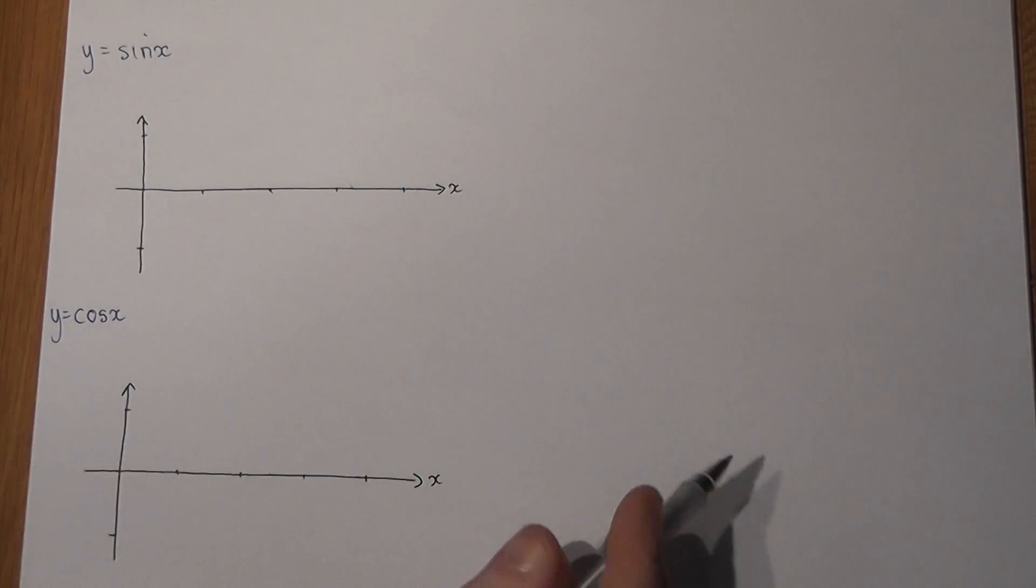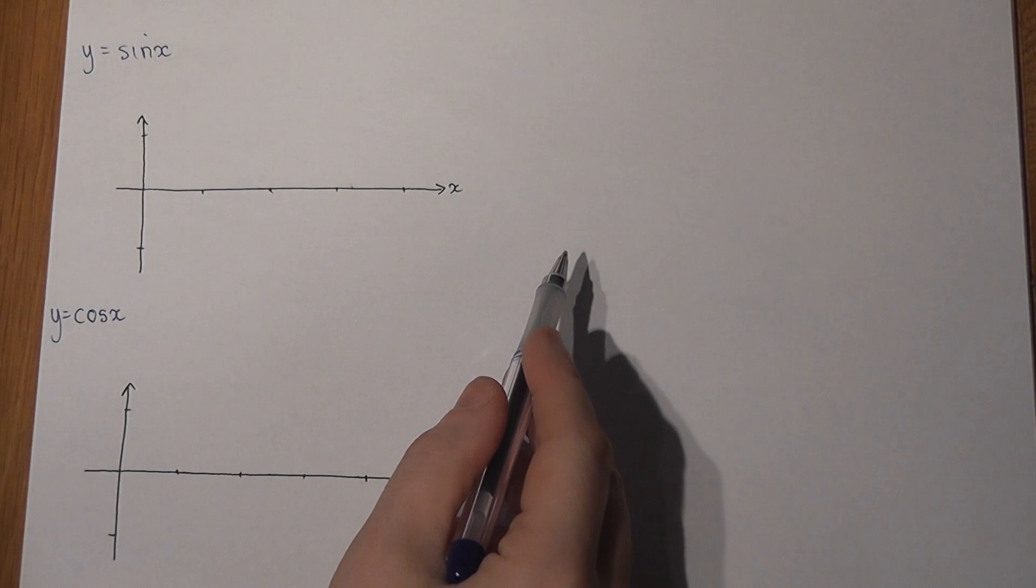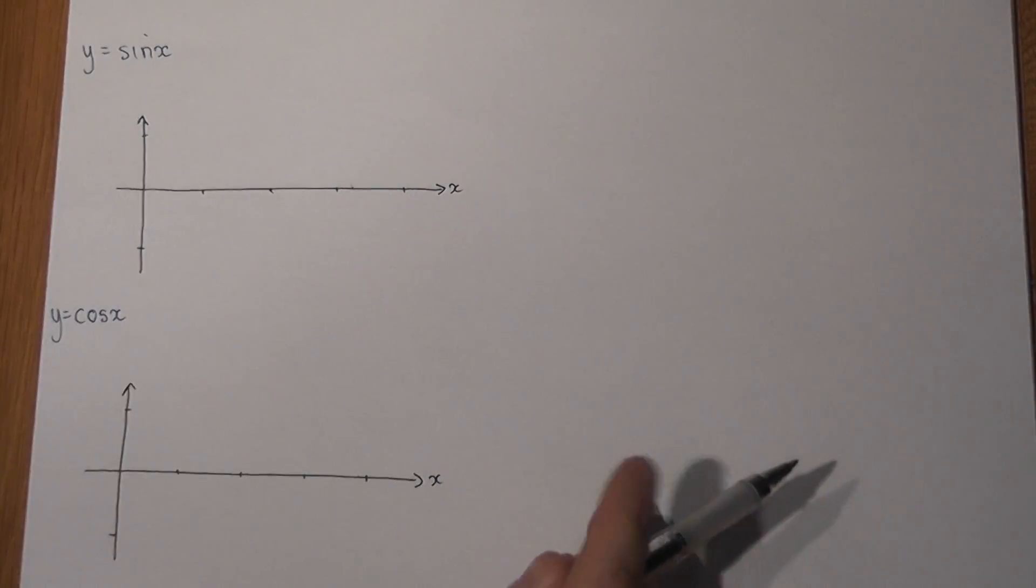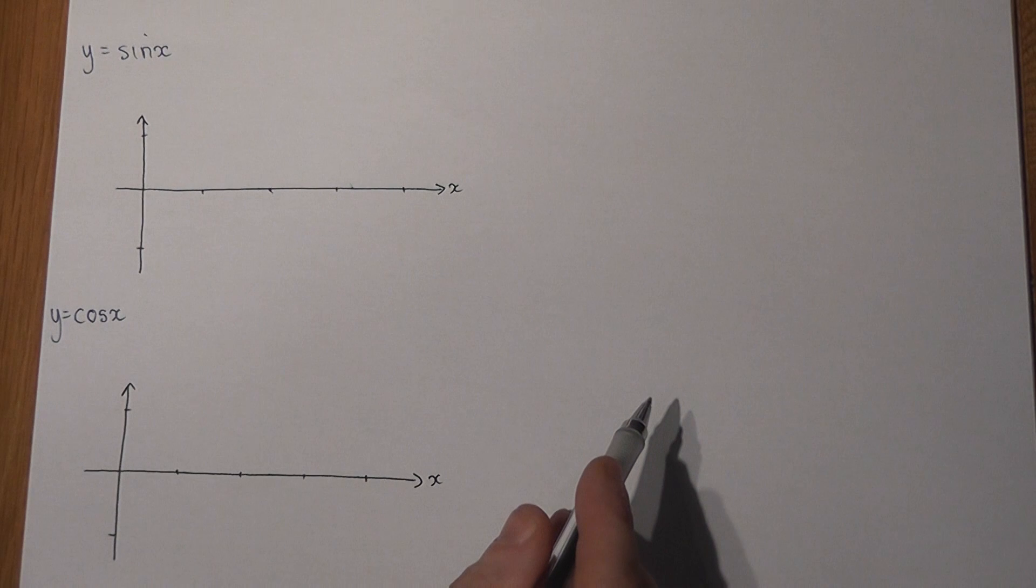In this example we review two key graphs, sine x and cos x, and also summarise some really important values which you need to know off by heart.